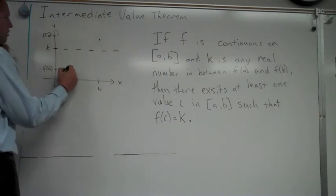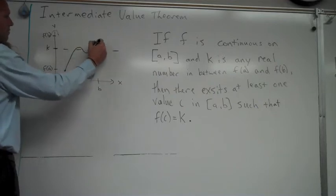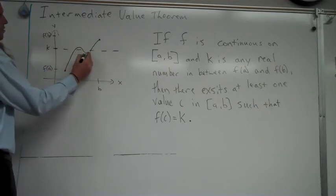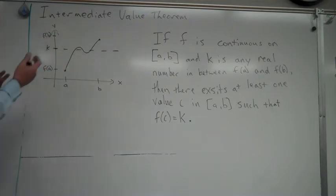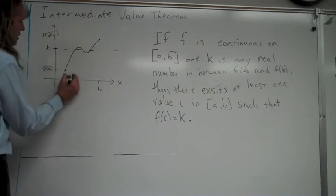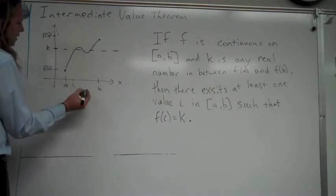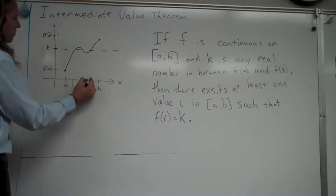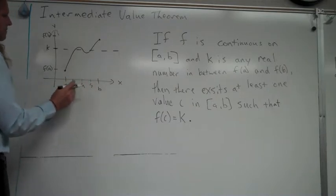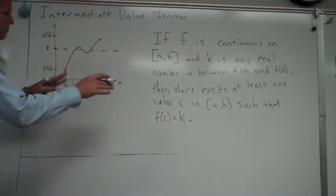For instance, it could do it a couple times, like let's look at right here. So there it did it one, two, three times. It could just do it one time if you do a straight line right through there, or it could even be curved and only cross once. These places where it crosses are referred to as values of c. I'll call these like c1, c2, and c3 for instance. And when I'm talking about c, I'm referring to this definition as I'll talk about right now.